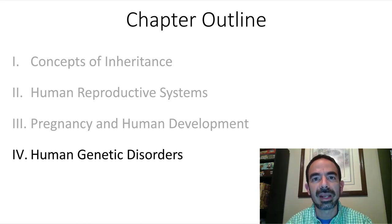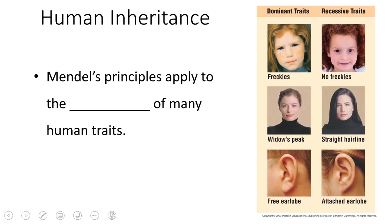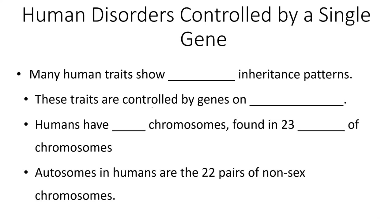In this video, we'll be discussing human genetic disorders. Gregor Mendel's principles apply to the inheritance of many human traits, such as having freckles or no freckles, having a widow's peak versus a straight hairline, or free earlobes versus attached earlobes. We wouldn't call these disorders — these are just variations within the human population. But there are genetic disorders that also follow these inheritance patterns, and many human traits show these simple inheritance patterns.